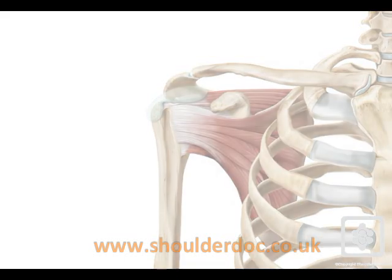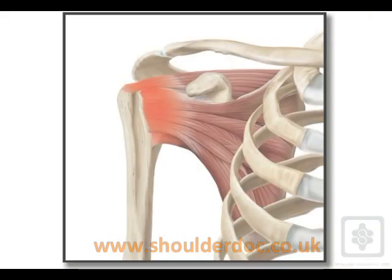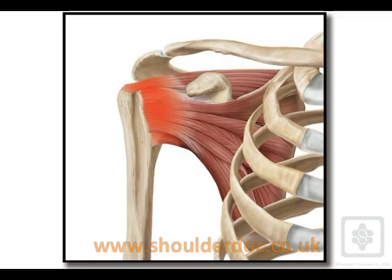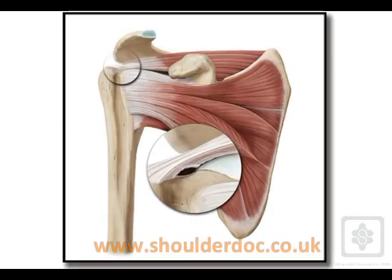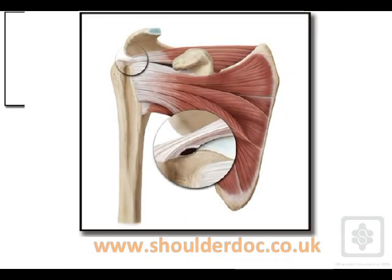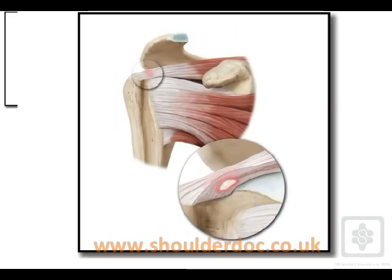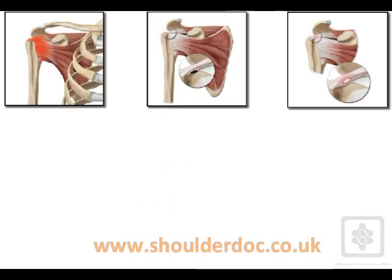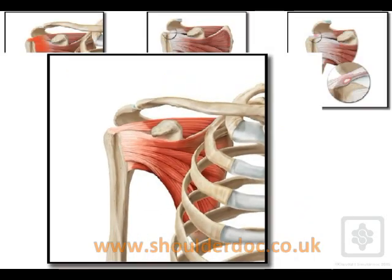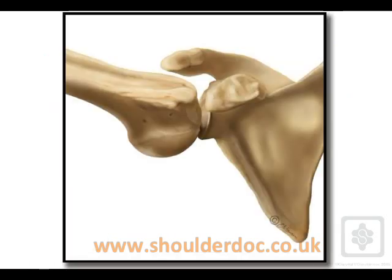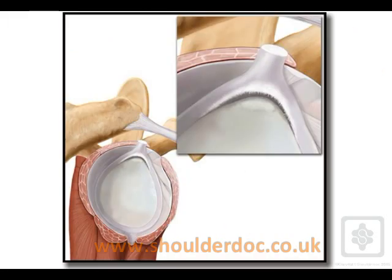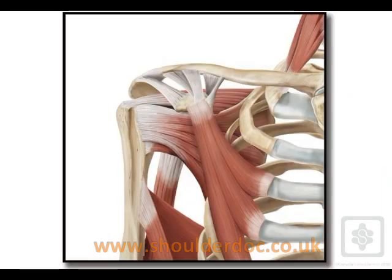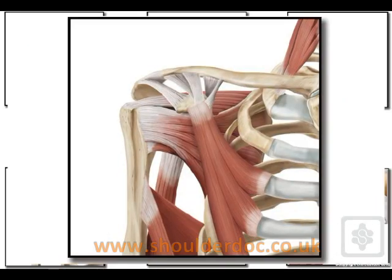Pathologies that could do this are those directly affecting the rotator cuff, such as rotator cuff strain, partial or full thickness tears, calcific tendinitis, and tendinopathy due to chronic overuse. Indirect causes include glenohumeral instability, labral tears — in particular SLAP tears — and abnormal muscle patterning problems of the shoulder.